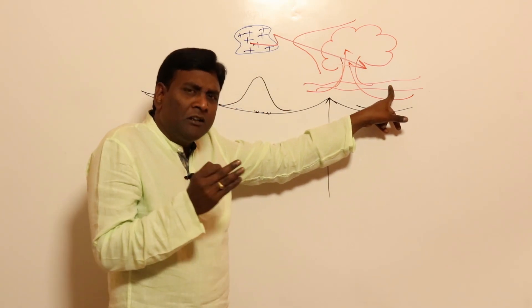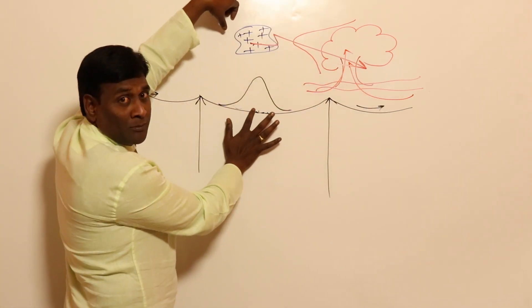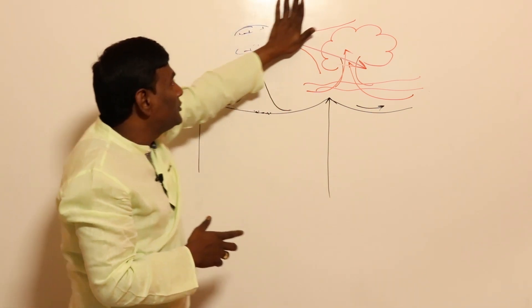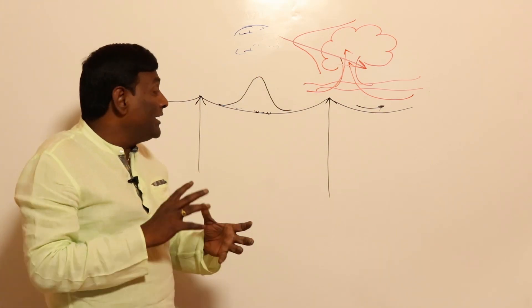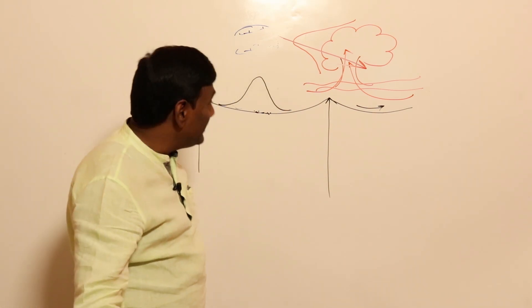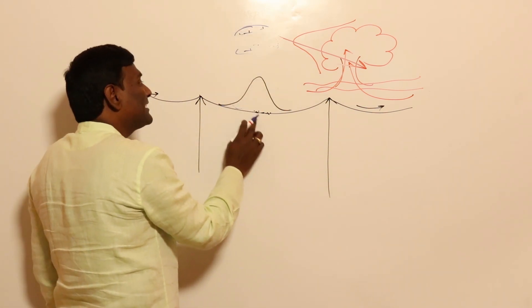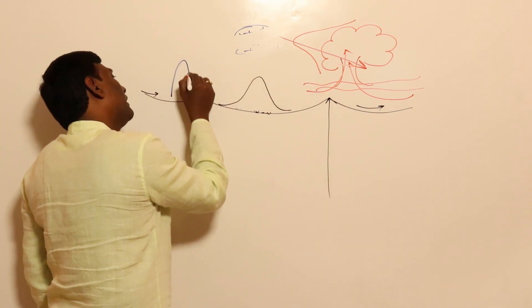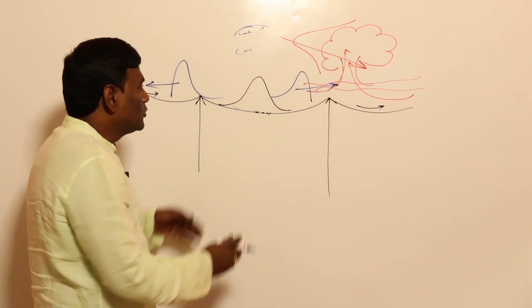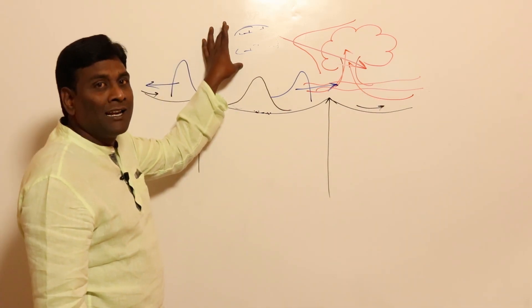The moment dielectric breakdown happens at the tree, instantaneously — immediately after that — from the transmission line's point of view, the force that was attracting the electrons is suddenly removed. There is no longer a force to keep those electrons accumulated on one side. So immediately, those electrons have to redistribute — they travel in both directions along the transmission line.